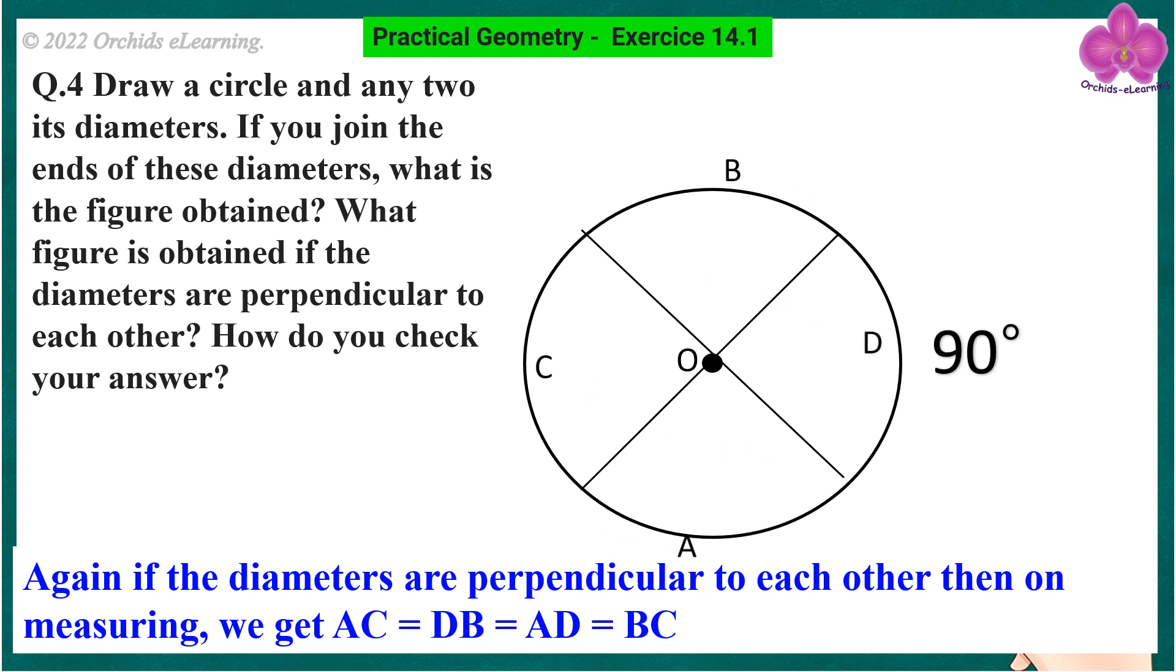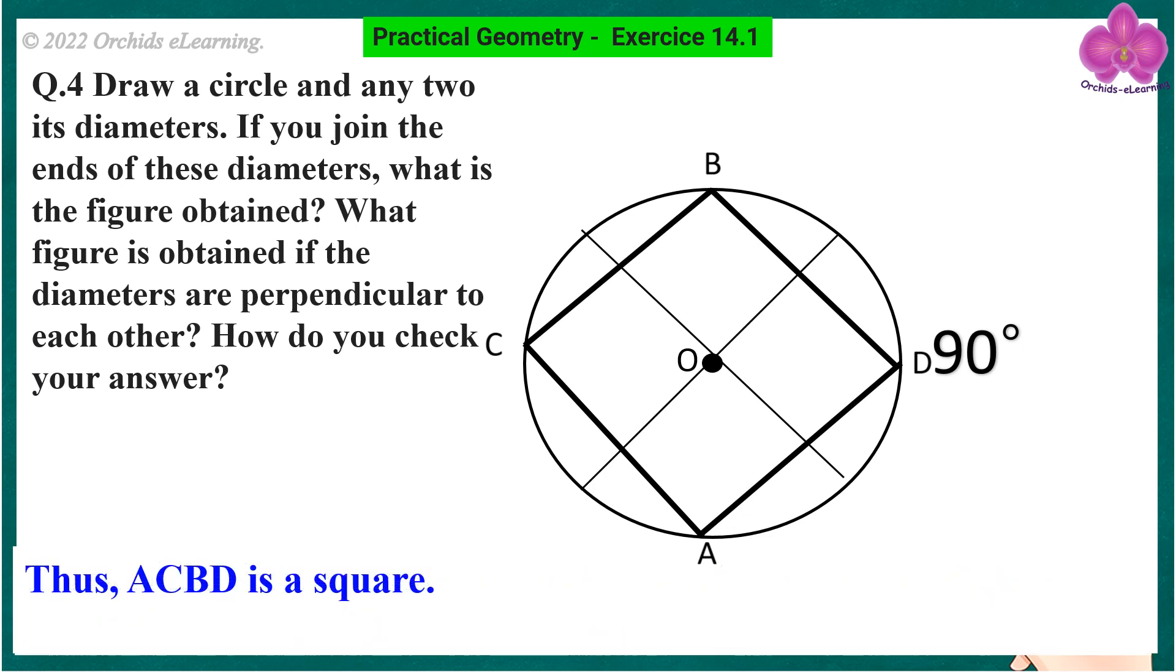Again, if the diameters are perpendicular to each other, then on measuring, we get AC equals DB equals AD equals BC. Thus, ACBD is a square.